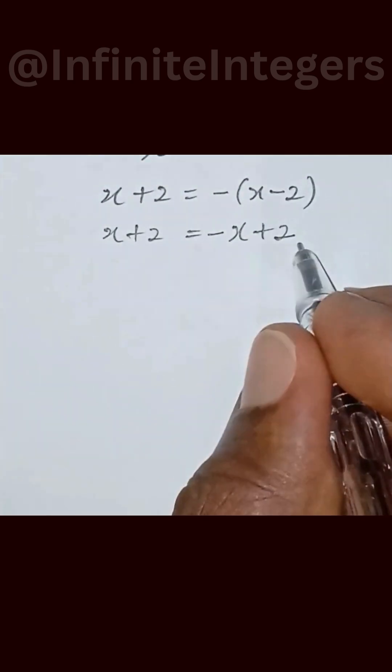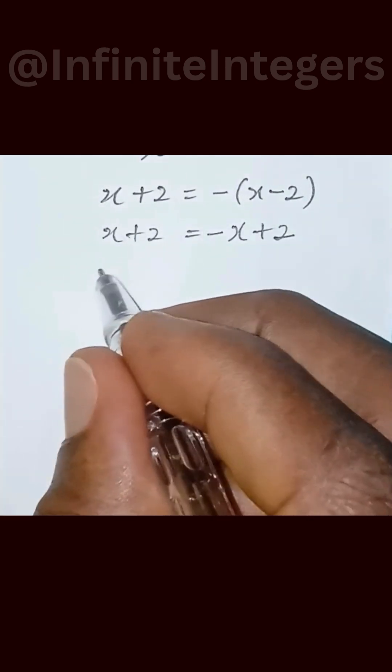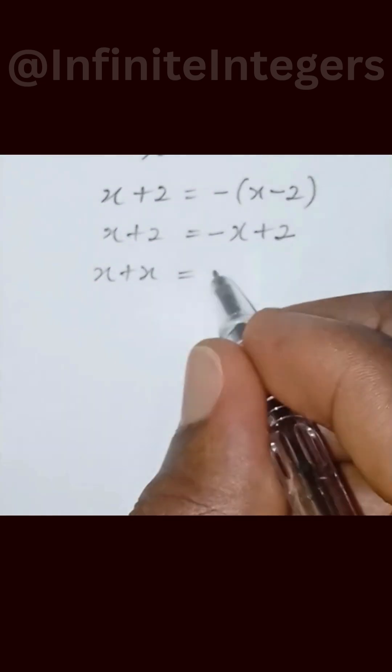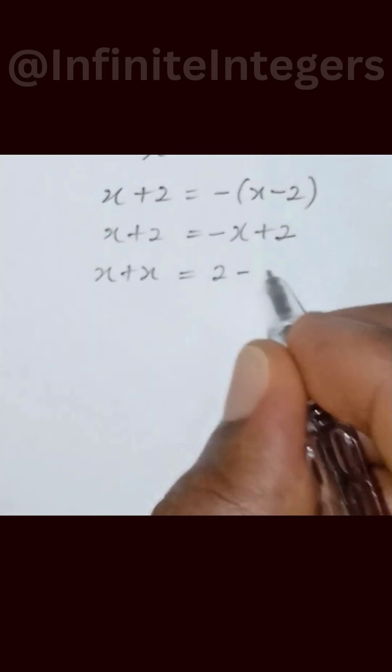And we bring this 2 to this side and we bring this x to this side. We have x plus x equal to 2 minus 2.